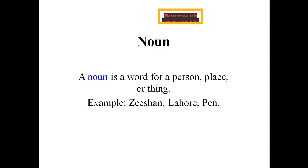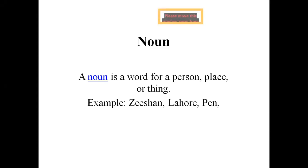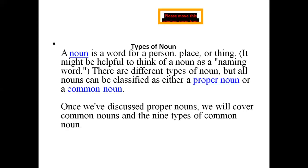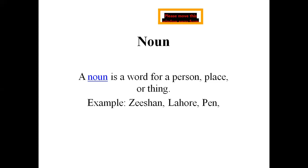Let's see what noun basically means. A noun is a word for a person, place or thing. If you look at the examples, you can see: pen, Zishan, marker, mobile phone — these are the examples of a noun.